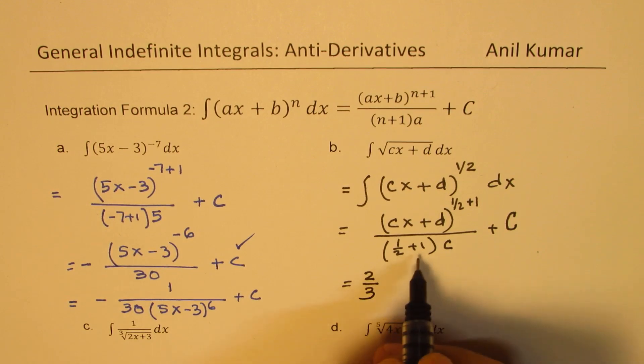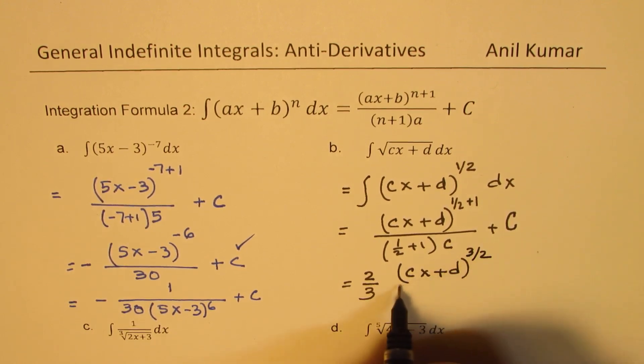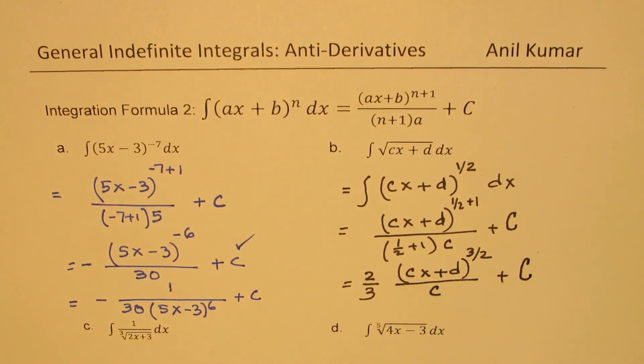Half plus 1 is 3 by 2, and this is also 3 by 2. So I could write this as 2 by 3 here, reciprocal of this, and we get here cx plus d to the power of 3 by 2 over lowercase c, and this is some other constant C. That is how you can actually get your solution.